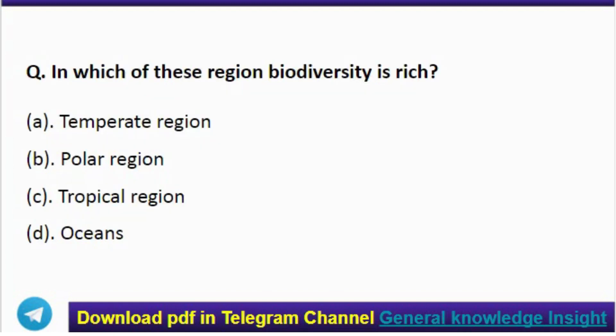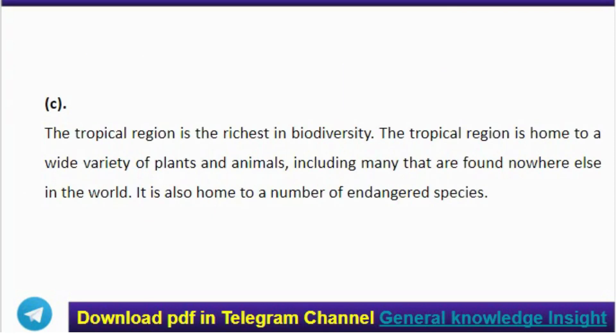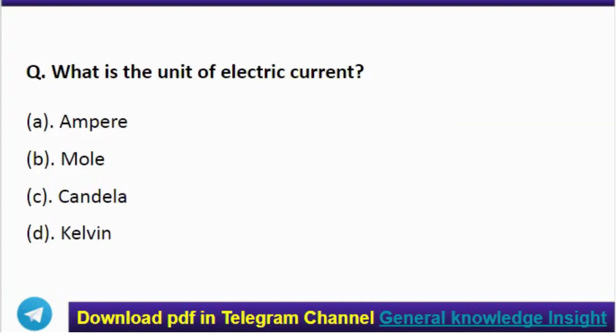Next question: in which of these regions is biodiversity richest? Correct answer: option C, tropical region. The tropical region is the richest in biodiversity. It is home to a wide variety of plants and animals, including many that are found nowhere else in the world. It is also home to a number of endangered species.